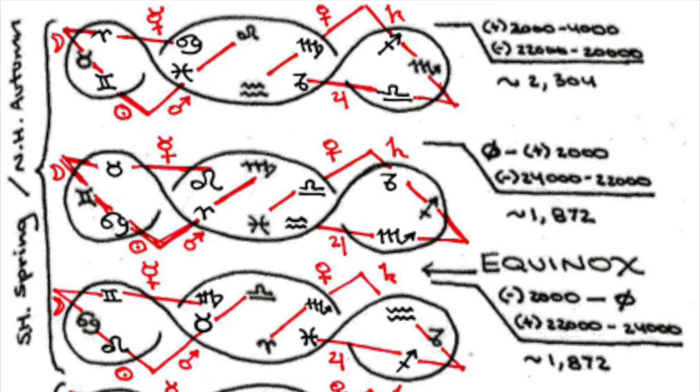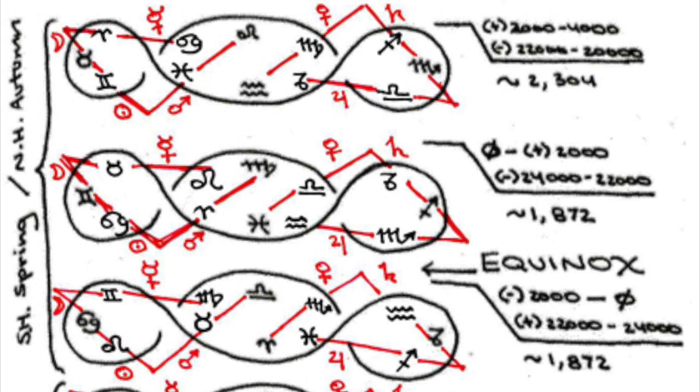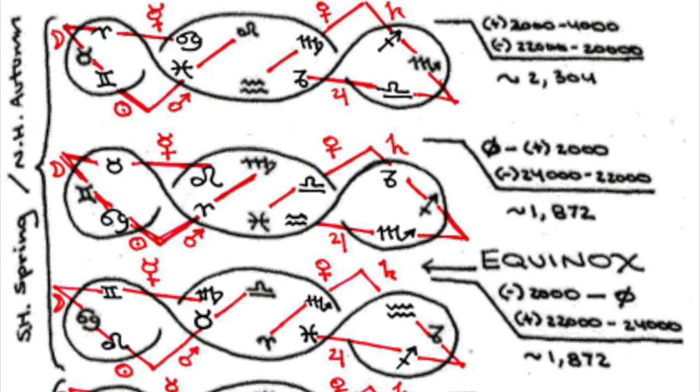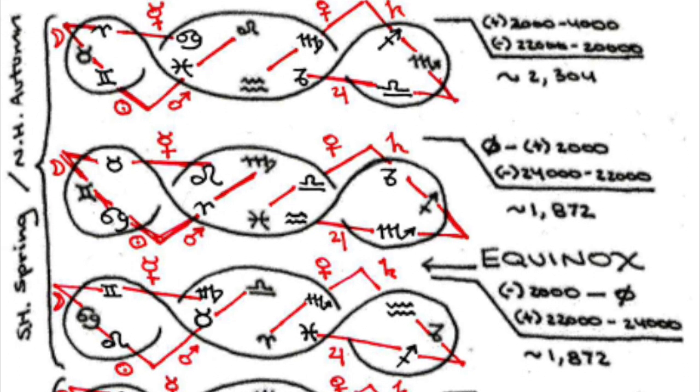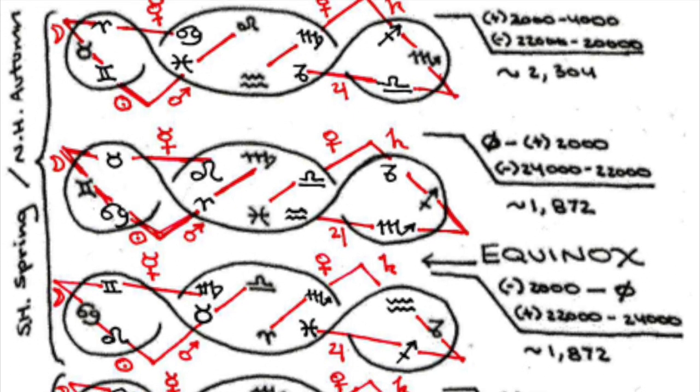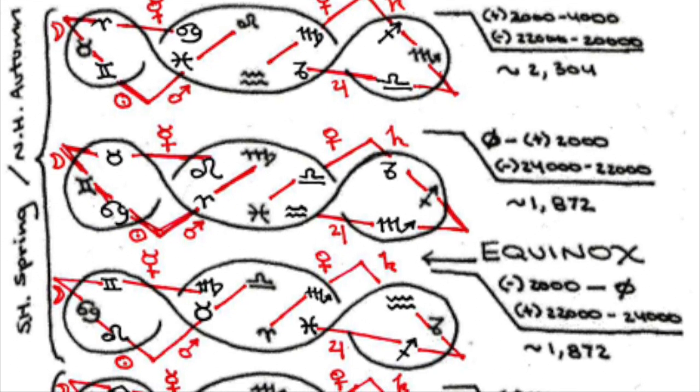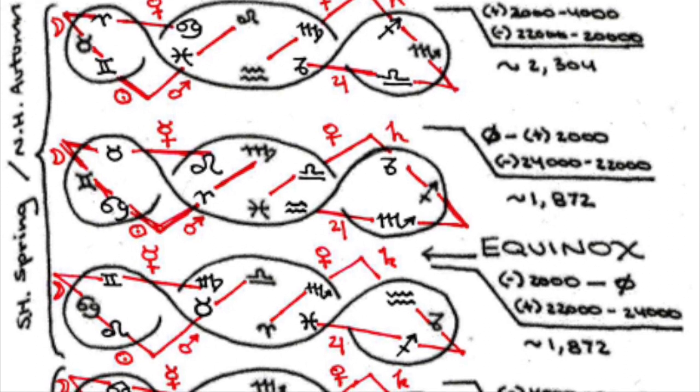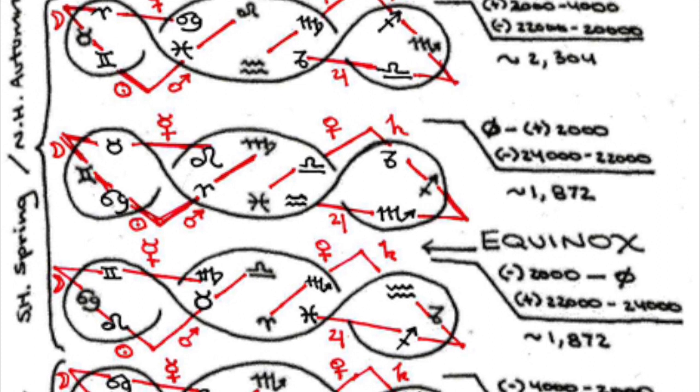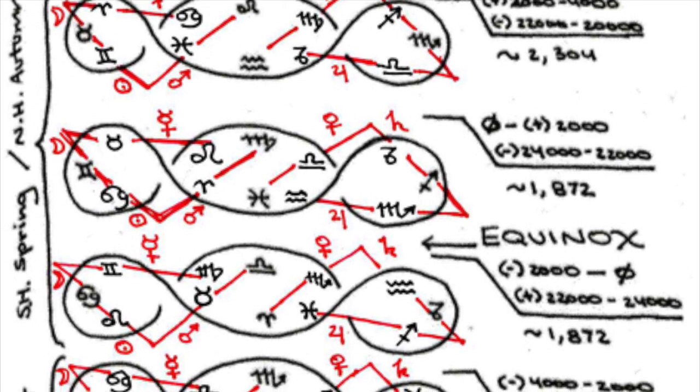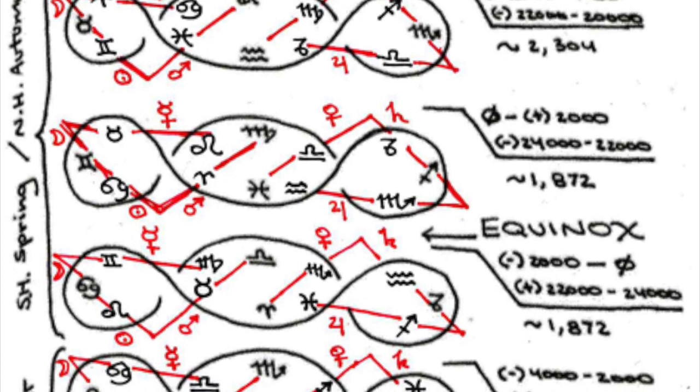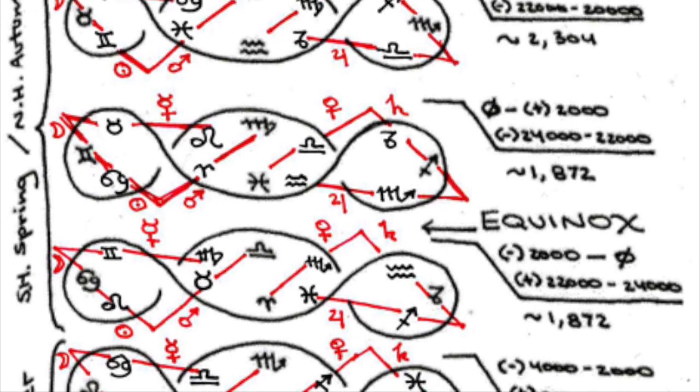The world is indebted to Pythagoras for the word philosopher. Before that time, the wise men had called themselves sages, which was interpreted to mean those who know. Pythagoras was more modest. He coined the term philosopher, which he defined as one who is attempting to find out.